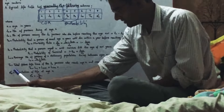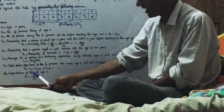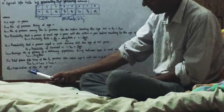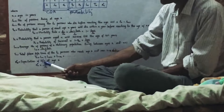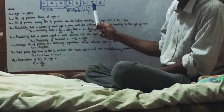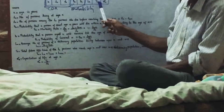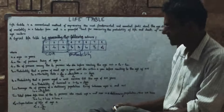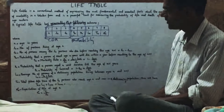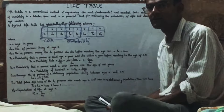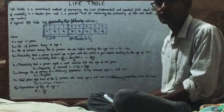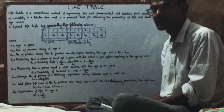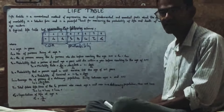The last column is E0X, the expectation of life at age X. E0X is TX over LX — total future population divided by current population. In the next video, I will show you an example of how we can represent a life table in practical life.